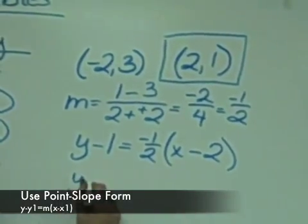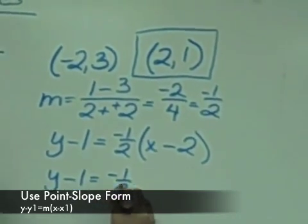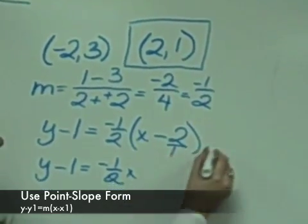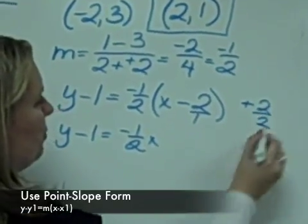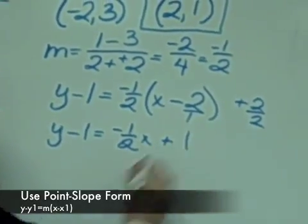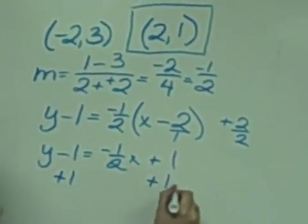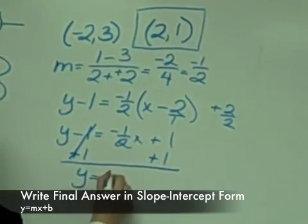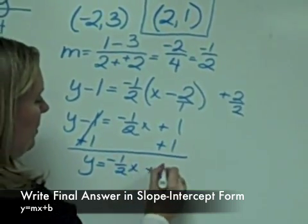I distribute by one-half, and I get y equals negative one-half x, and then one-half times two gives me positive two over two, which reduces to one, so that's going to be a positive one. I'm going to add one to both sides to get the y by itself. My final equation is y equals negative one-half x plus two.